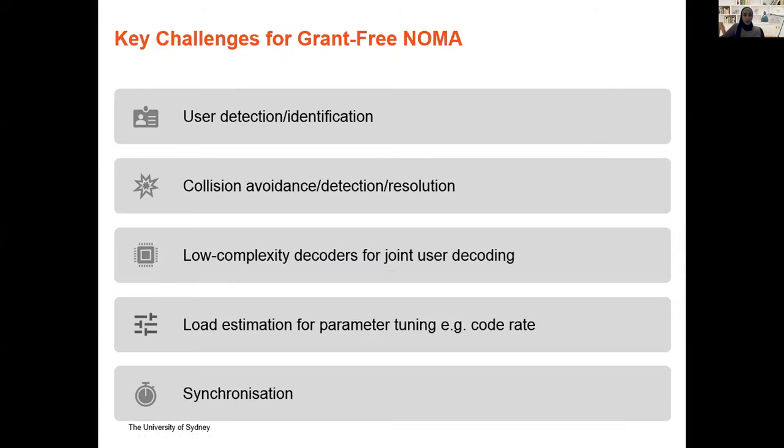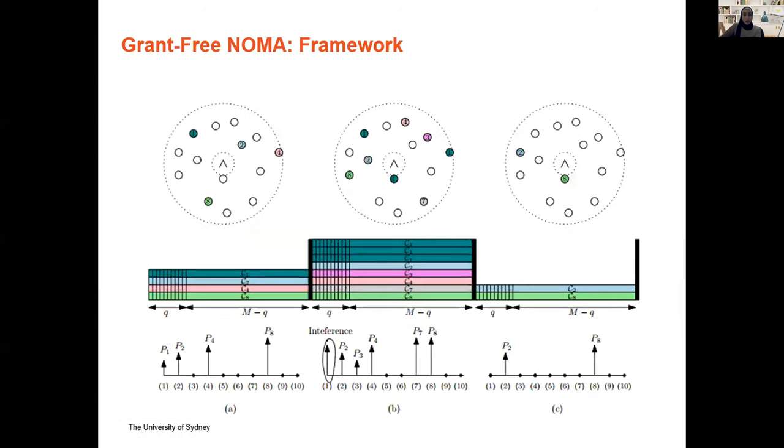These are the main structures for grant-free NOMA. This is a very generic framework where you can see from one time slot to the other, the number of users that are active change and the identity changes. What happens is if they are attached to a certain signature sequence, we can do some auto correlations and cross correlations, similar to the ones that we do in 4G in the random access channel. But in this case, the data and the pilots are combined together and transmitted in one shot, so we can do decoding straight away and we avoid this whole four-way handshake.